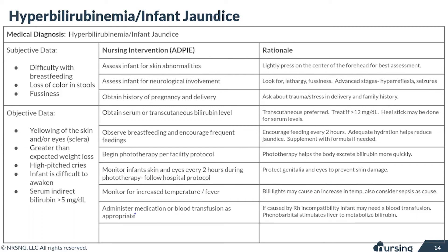Sometimes if phototherapy or increasing hydration isn't working, we may need to give medications or even a blood transfusion. Usually the blood transfusion is when we've got blood incompatibility between mom and baby. For medication, what we sometimes could give is phenobarbital, which actually stimulates the liver to metabolize the bilirubin more quickly.